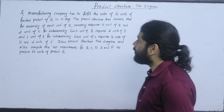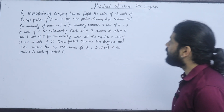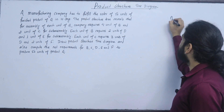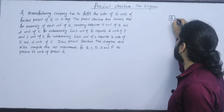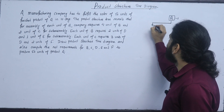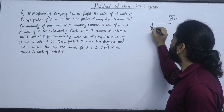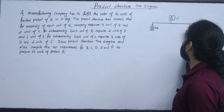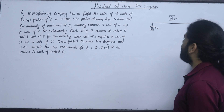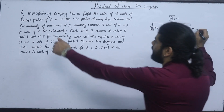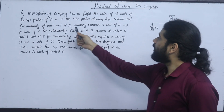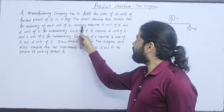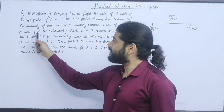The product structure reveals that for assembly of each unit of A, a company requires 4 units of B and 2 units of C. Each unit of B requires 4 units of B and 2 units of C for assembly.